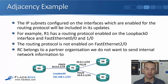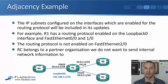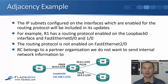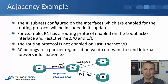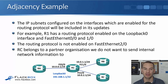Here's an adjacency example. We've got router R1 in the middle and RA, RB, and RC. On R1, we've got a loopback configured with IP address 192.168.1.1/32. The IP subnets configured on the interfaces which are enabled for the routing protocol will be included in its routing protocol updates. R1 has a routing protocol enabled on the loopback 0 interface and interfaces FastEthernet 0/0 and 1/0, but it's not enabled on FastEthernet 2/0.